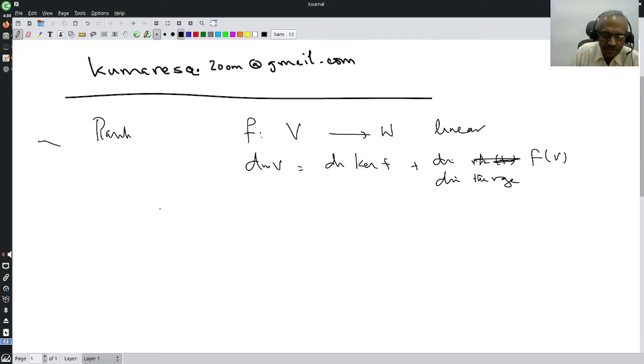So this is a necessary condition. If F is a linear map, these are all vector spaces, this must be. Conversely, this is a necessary condition.